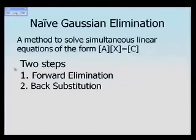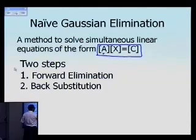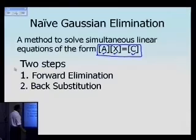The naive Gaussian method is basically a way to solve simultaneous linear equations which can be written in the form of Ax equals C, where A is the coefficient matrix, C is the right-hand side vector, and X is sometimes called the solution vector or the unknown vector.